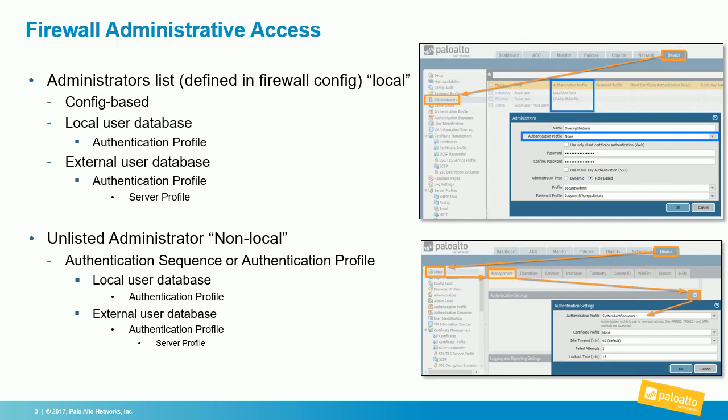There are two different ways to define an administrator of a Palo Alto Networks firewall. The first and easiest method is simply by creating an admin account in the administrators list — found under the Device tab under Administrators — where you click Add, define their username and password, and then the role you wish them to have. The role could either be dynamic or role-based.